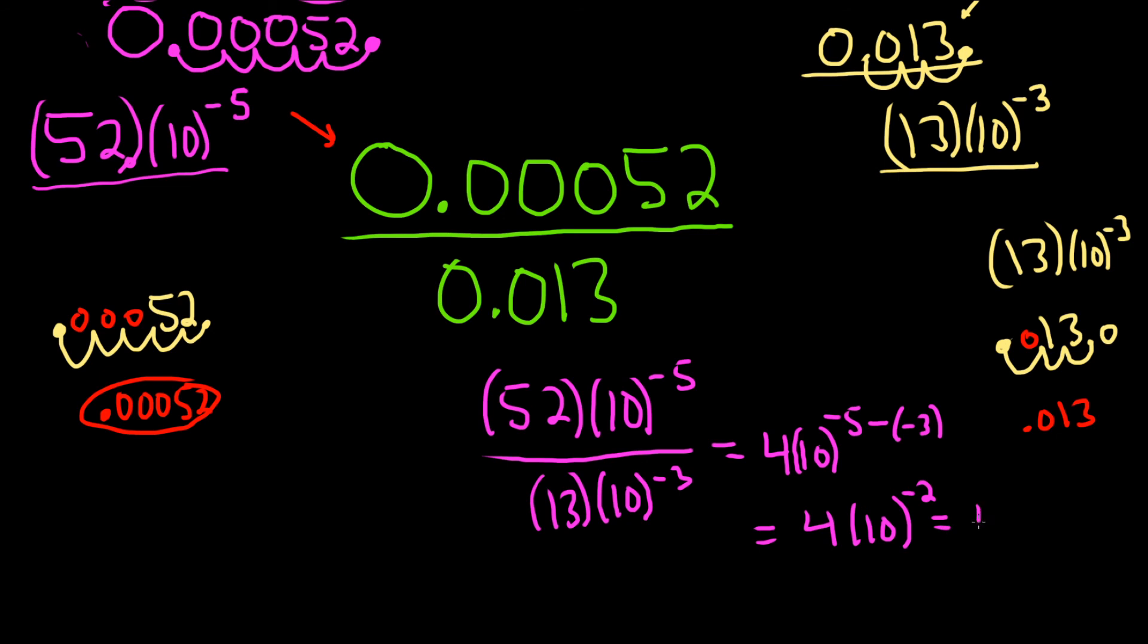So this is really 4 times 1 over 10 squared, which is really 4 over 100, which is really simply .04. So that would be the result.